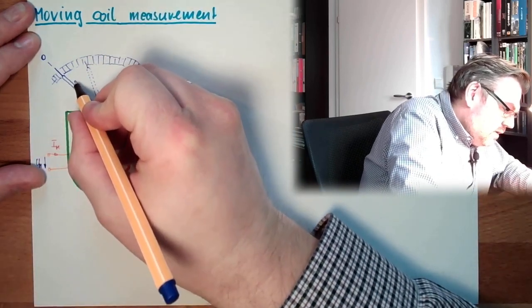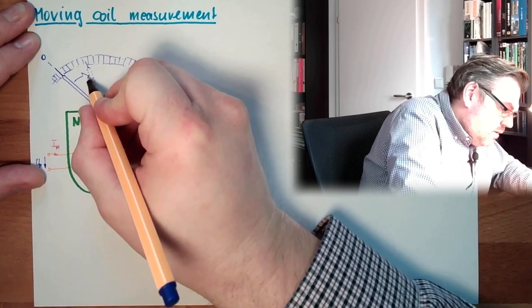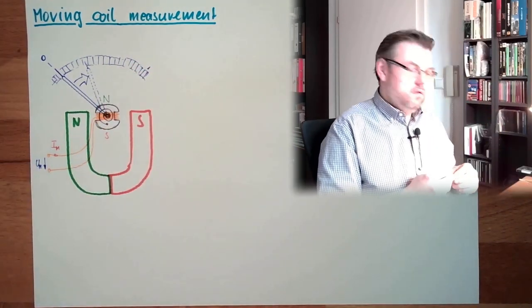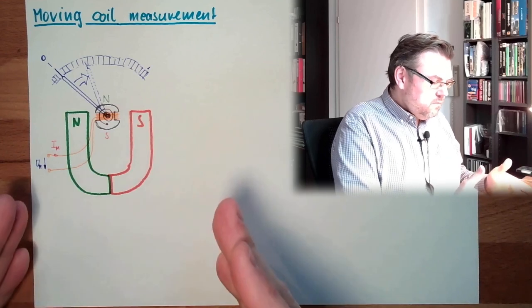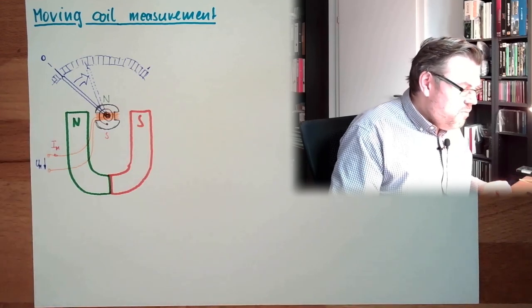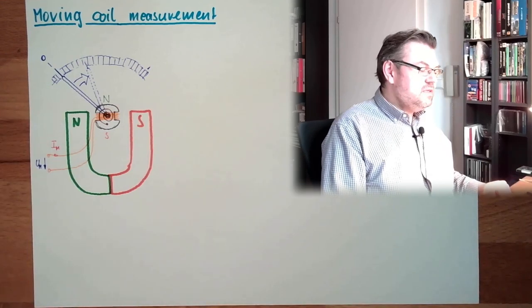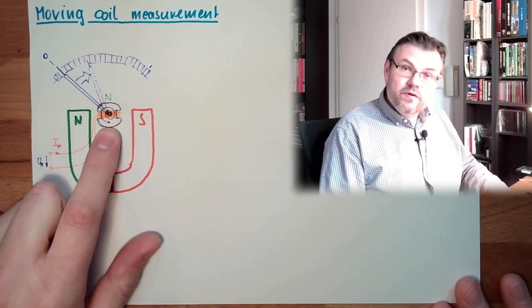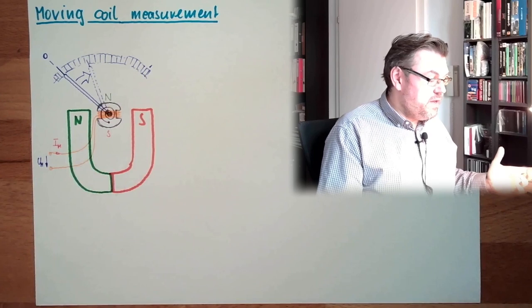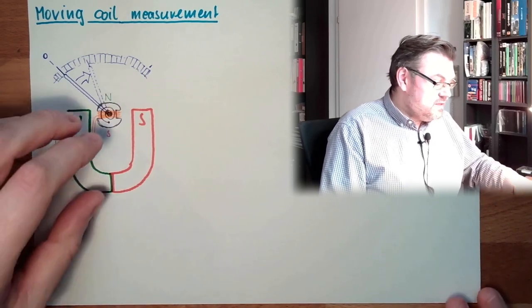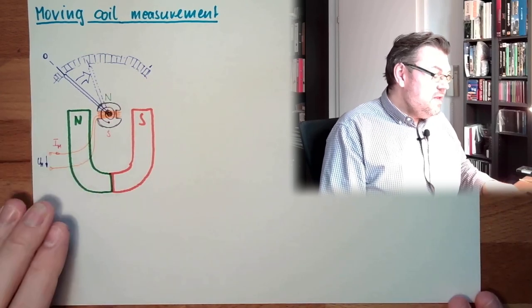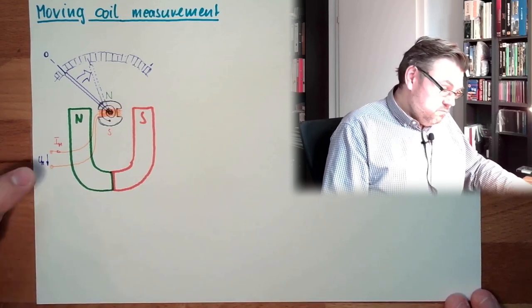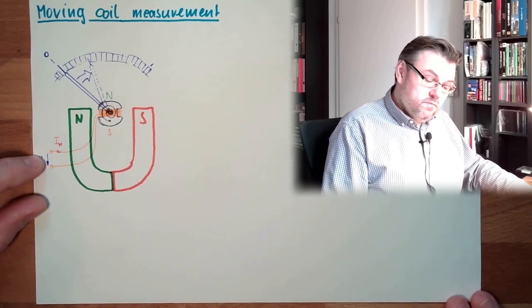The pointer is moving in this direction. This is how a moving coil measurement device is working. It's called moving coil because the coil is moving. There is no better name for this. That's the working principle. It is measuring direct current, DC.